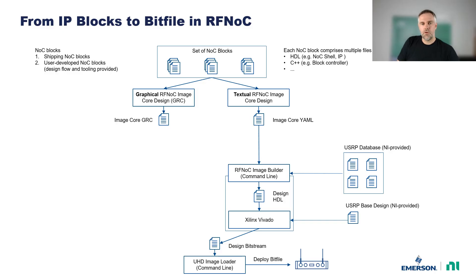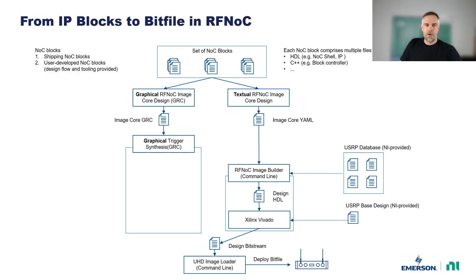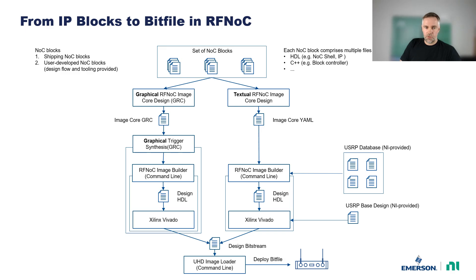In the graphical workflow, on the other hand, we'll use GNU Radio Companion to stitch together IP blocks that are part of our RFNOC image core. We can then trigger a synthesis directly from GNU Radio Companion. Under the hood, RFNOC image builder and Xilinx compile tools will be started to produce a bitfile, which can then be deployed to the USRP using the UHD image loader.